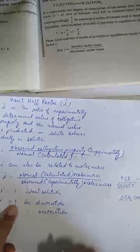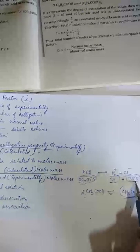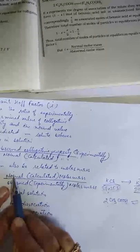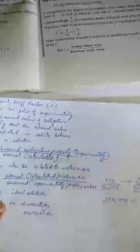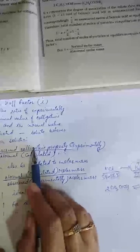i is more than 1 for dissociation. For example, KCl dissociates into potassium ion and chloride ion — it is an electrolyte. This means the observed molar mass will be less than the normal molar mass, so normal molar mass in the numerator is larger and the observed molar mass in the denominator is smaller, making i greater than 1. After dissociation, the number of particles increases, so the observed colligative property is more, and therefore i is more than 1 for dissociation.